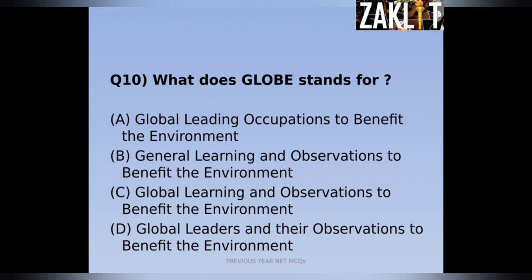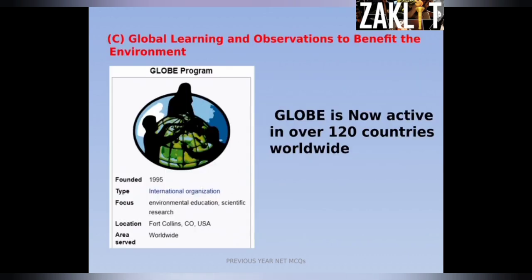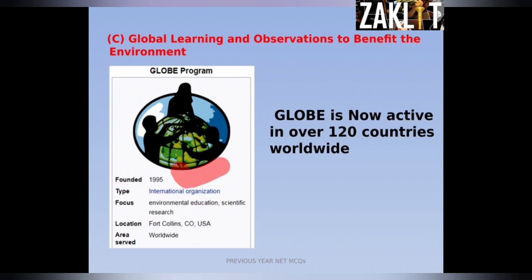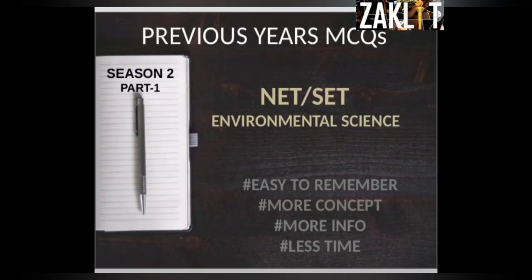The tenth question: what does the term GLOBE stand for in environmental science? The correct answer is option C — GLOBE stands for Global Learning and Observations to Benefit the Environment. It is an international organization operating in over 120 countries, focusing on environmental education and scientific research. It was founded in 1995. That's all for this lesson — thank you and stay tuned for the second lesson.